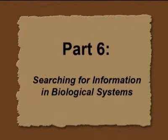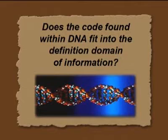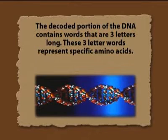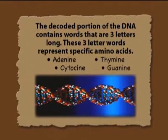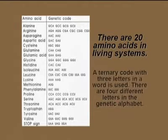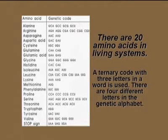Let's have a look at biological systems. Does the code found within DNA fit into the definition domain of information? That is a very important question. The decoded portion of the DNA contains words that are three letters long; those three letters represent specific amino acids. Adenine, thymine, cytosine, and guanine — there are four letters in the genetic code. On this picture you see the 20 amino acids in the genetic code. One word has three genetic letters: it is a ternary code with three letters in a word, and there are four different letters in the genetic alphabet.